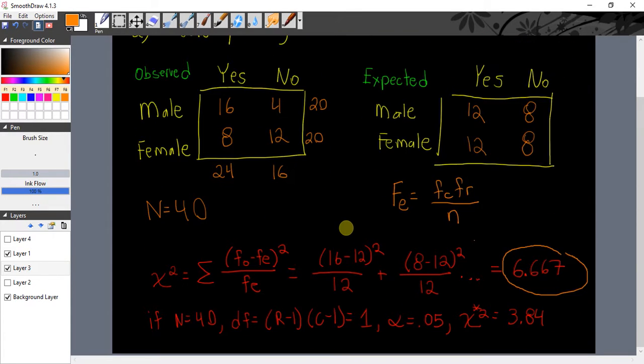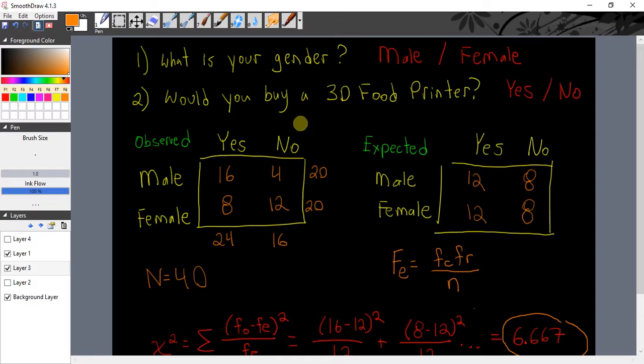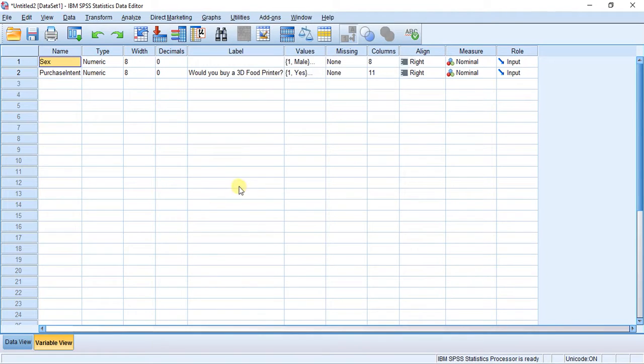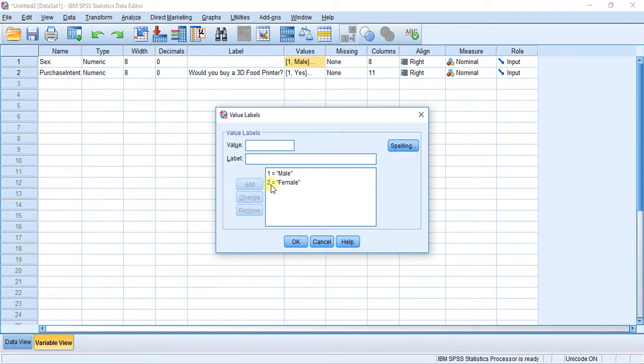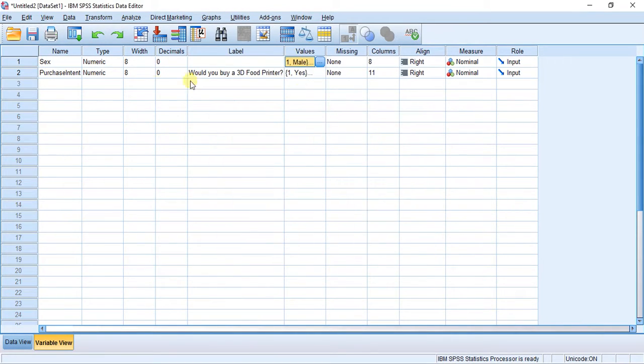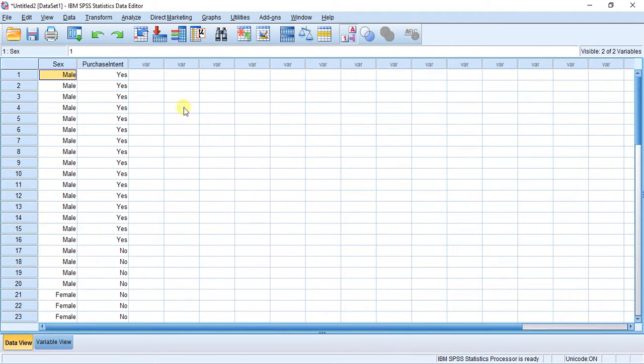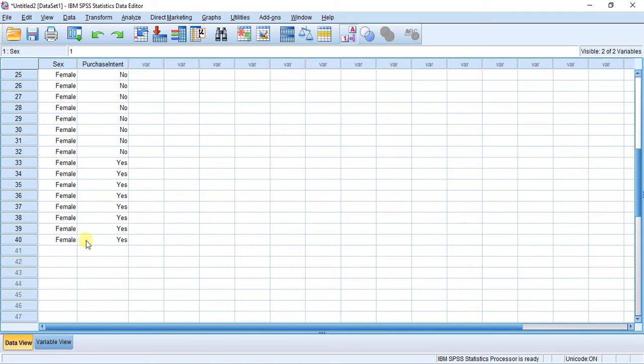And so you say, Jason, we've figured this out. We've done it in pen and paper. We know there is a relationship between males and females with regards to interest in buying a 3D food printer. But what if you had thousands of people in your sample? This would get pretty messy and that's why we have SPSS. And so here I have the exact same data. One variable is sex and we have males and females. The other variable is purchase intent and we have yes and no.